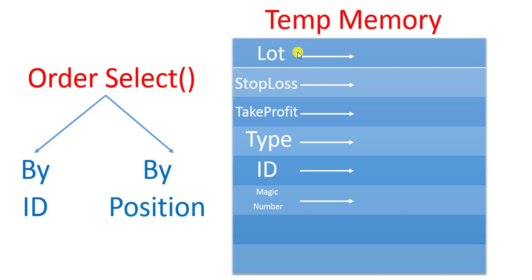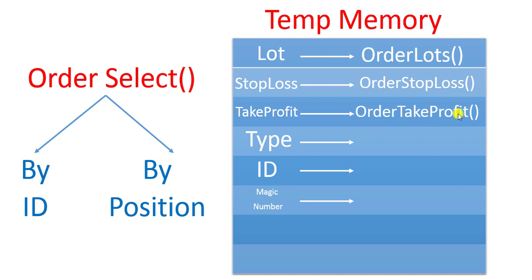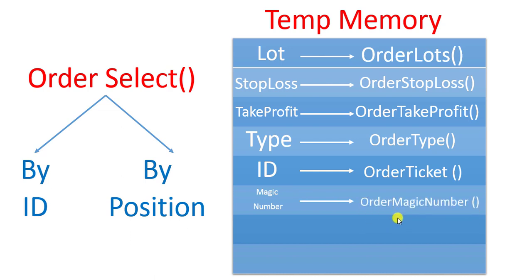We can access the order data through predefined functions. For example, to access lots use OrderLots, for stop loss use OrderStopLoss, for take profit use OrderTakeProfit, for order type use OrderType, and for the ID use OrderTicket.